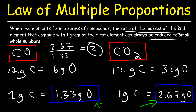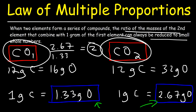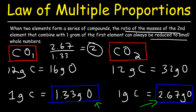The reason for that is there are twice as many oxygen atoms in carbon dioxide compared to carbon monoxide. That's the main idea behind the law of multiple proportions. Whenever you have two elements that form a series of compounds — in the case of CO and CO₂ — the ratio of the masses of the second element that combined with one gram of the first element can always be reduced to small whole numbers.